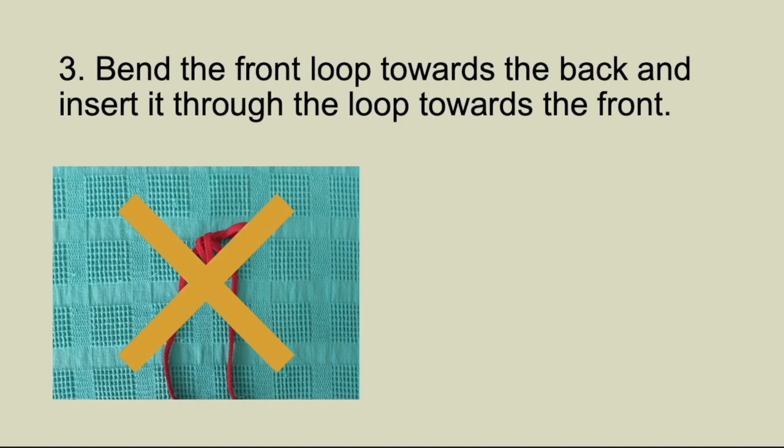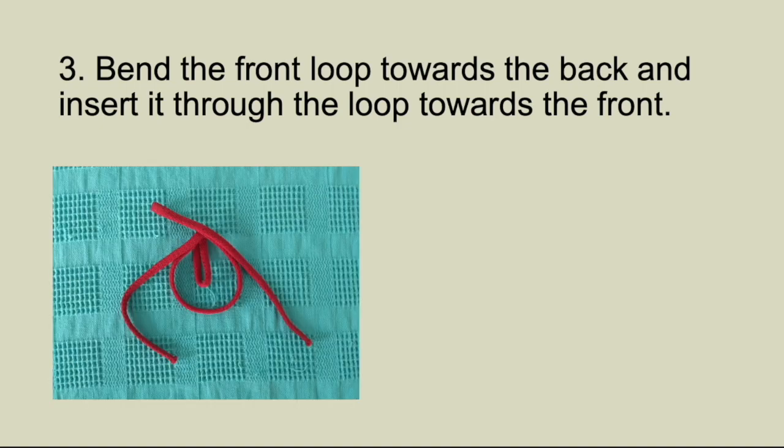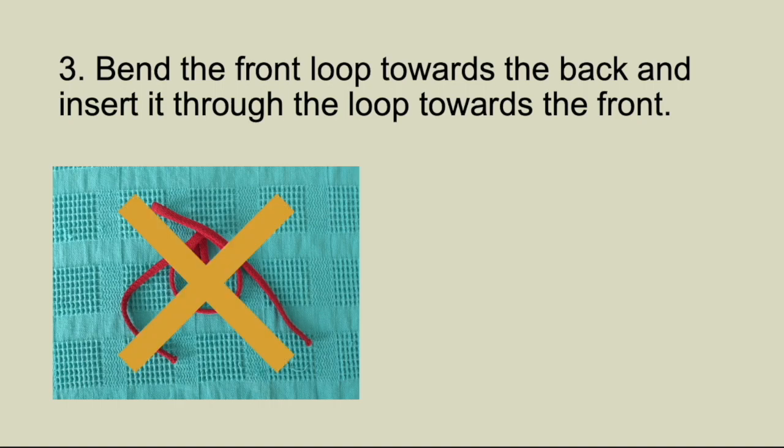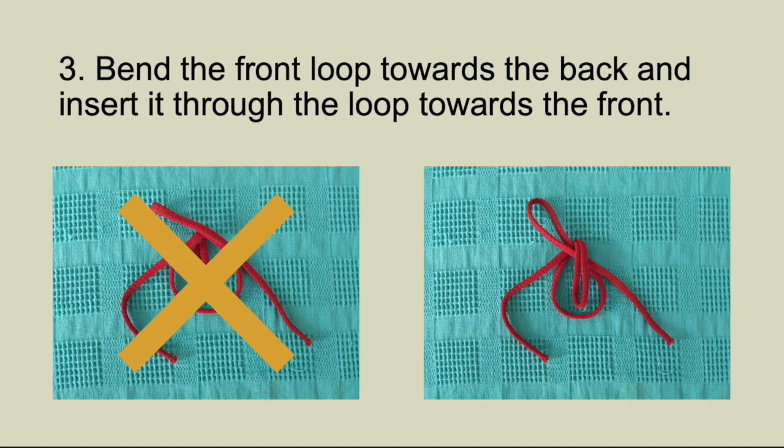Something similar would happen if it is the back ear that I bend and still bend it towards the back and pull it from the front. However, if I bend the back ear towards the front and insert it through the loop towards the back, then I still get almost the same knot, but it is a little different.